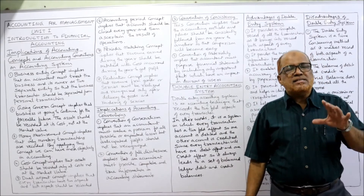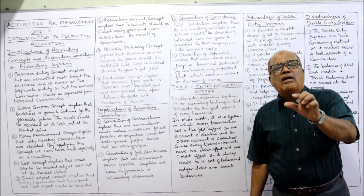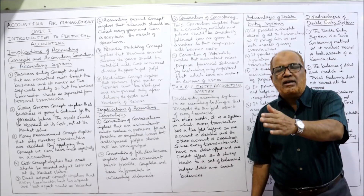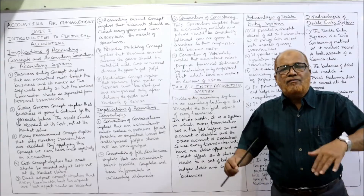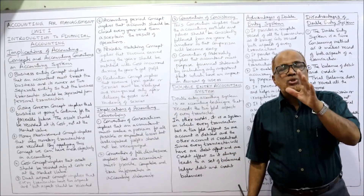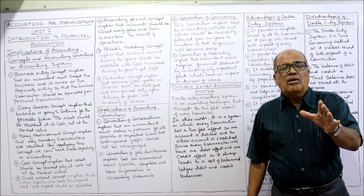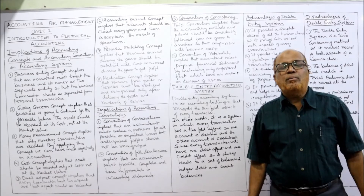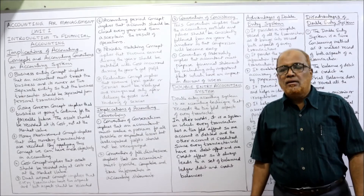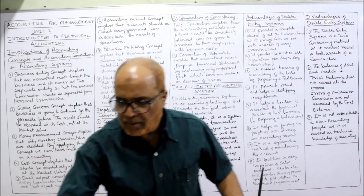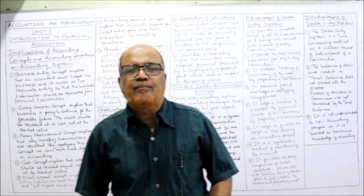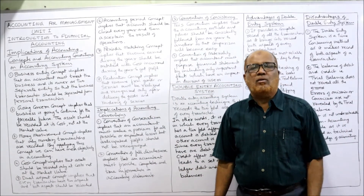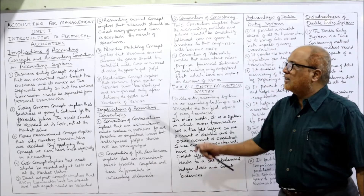Next is the convention of consistency. According to this convention, accounting methods and accounting policies should be consistently followed from one year to another year. Accounting methods should not be frequently changed. If we follow the same accounting methods, we can make comparisons — comparison of the performance of one year with another year, or one organization with another organization.